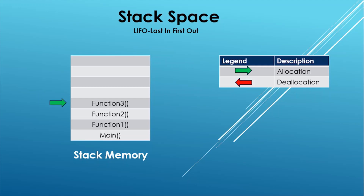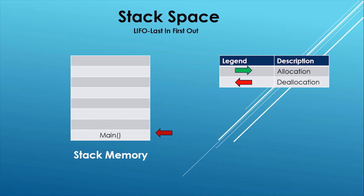Suppose function 3 is the last function and does some processing. Once its processing is complete, deallocation will start. Since all stack operations happen from the top only, function 3 is currently at the top. Once execution of function 3 is done, it will be removed and the top will point to function 2. Similarly, once function 2 is done, function 1 will be on top, and in the end main will remain. Once program execution is completed, the stack space will be emptied.